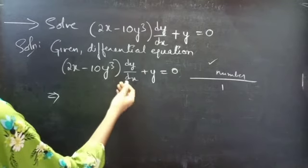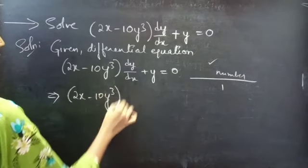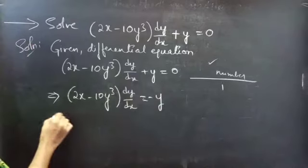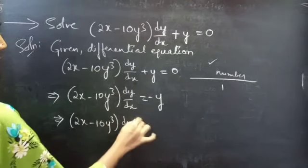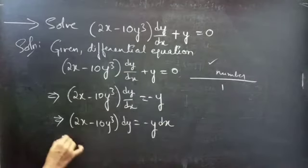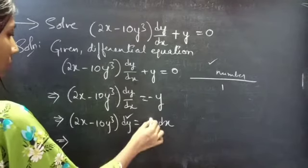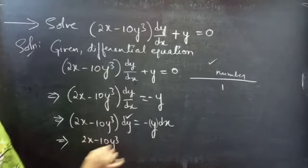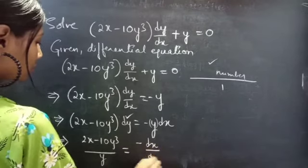Let's see how we are going to change this equation. Take this y to the RHS — plus y becomes minus y. Then (2x minus 10y³) dy equals minus y. Take the differential dx to the RHS to get dx. Now take the differential dy to the RHS and bring y to the LHS. Then you will get (2x minus 10y³)/y equals minus dx/dy.